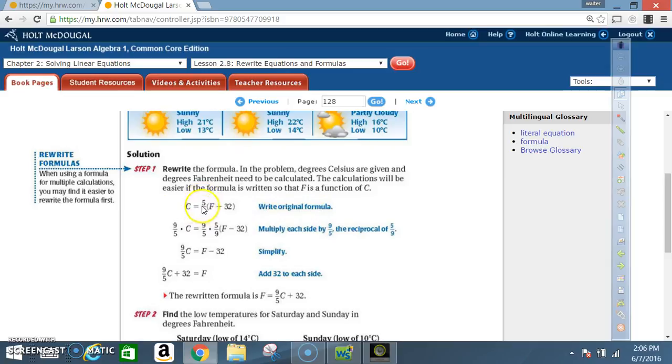C equals 5 over 9 times F minus 32. Now, the first thing we want to get rid of is 5 over 9. We want to get rid of that fraction. So we're going to multiply each side by 9 over 5, the reciprocal of 5 over 9. So on this side, we put 9 over 5 times 5 over 9. And over here, we put 9 over 5 times C. We've already learned that we can multiply this a couple of ways. So we're going to say 9 times 5, that's 45. 5 times 9 is also 45. 45 divided by 45 is 1.